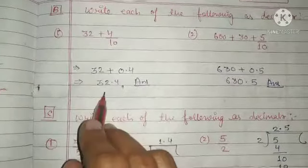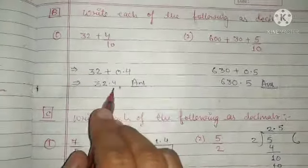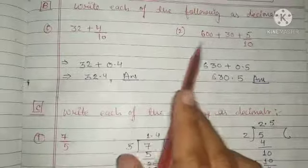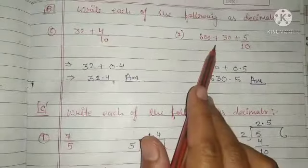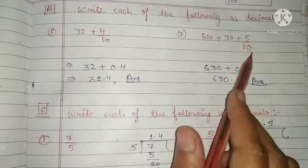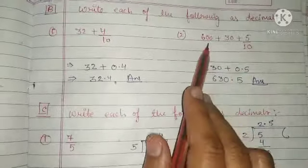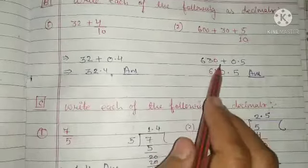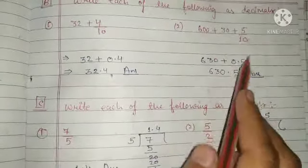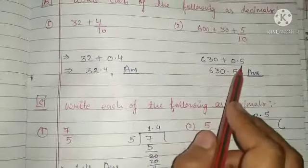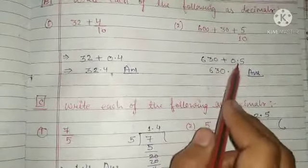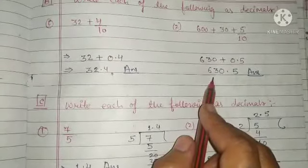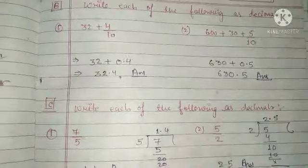Combining gives the answer 32.4. The second part is 600 plus 30 plus 5 upon 10. Adding 600 and 30 gives 630. Dividing 5 by 10 gives 0.5. Adding both together, our answer is 630.5.